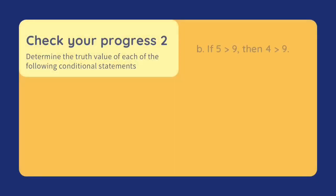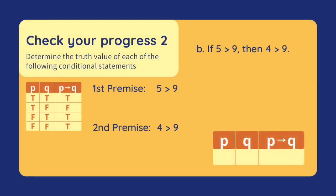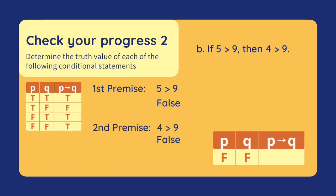Let's have another one. If 5 is greater than 9, then 4 is greater than 9. Our first premise is '5 is greater than 9.' This is false because 5 is less than 9. Our second premise is '4 is greater than 9.' This is also false because 4 is less than 9. Since both premises are false, our conditional is true.